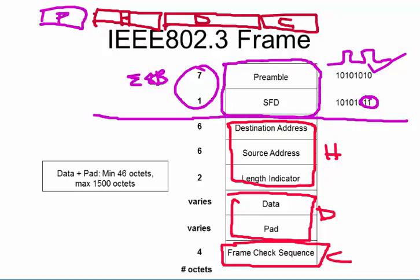The data field has what's called a pad. The data plus pad must be a minimum of 46 bytes. In the days of collision detection, packets had to meet a minimum size to ensure collision detection worked correctly. If you had only three bytes of data, they'd add 43 pad bytes to reach that minimum of 46. Since we don't really work with collision detection nowadays, this is mostly of historical value.